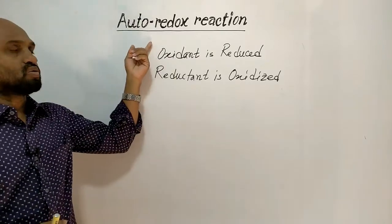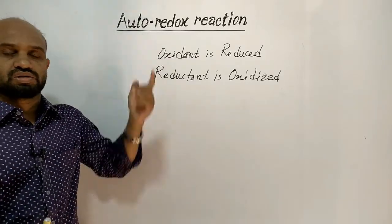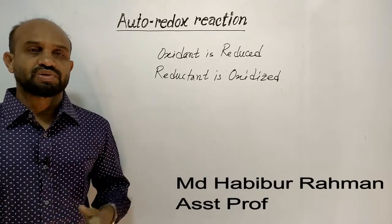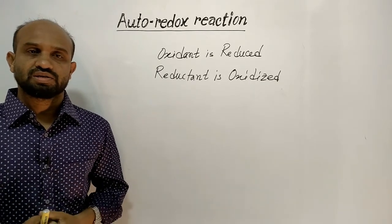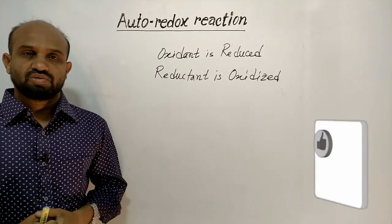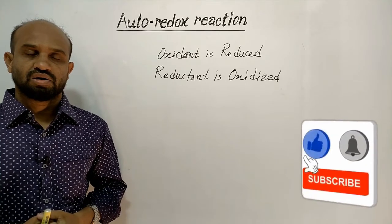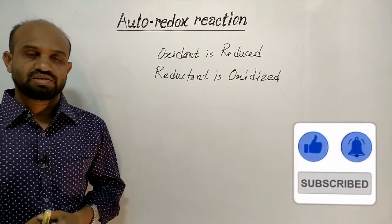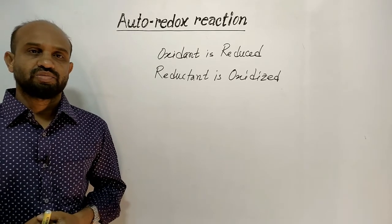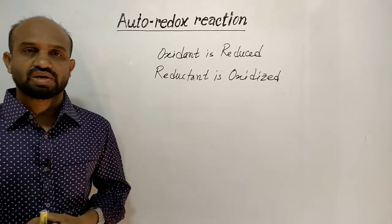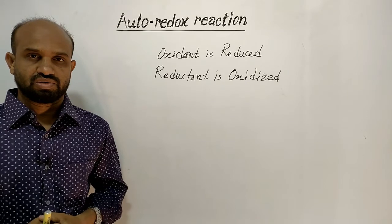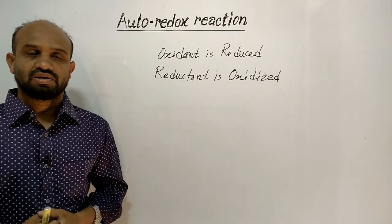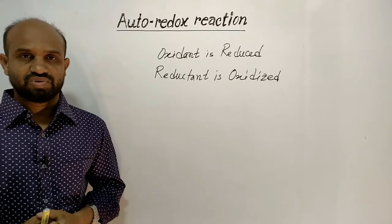Today's lesson is autoredox reaction. Autoredox reaction is a kind of reaction in which one element of a reactant molecule is oxidized and another element of the same reactant molecule is reduced. So the matters are oxidized and reduced.